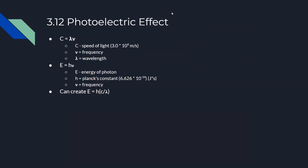Section 3.12 covers the photoelectric effect. The equation c = λν relates the speed of light (c = 3.0 × 10⁸ m/s), wavelength (λ), and frequency (ν). Energy is given by E = hν, where Planck's constant h = 6.626 × 10⁻³⁴ J·s. Combining these gives E = hc/λ, allowing energy calculation from either frequency or wavelength.